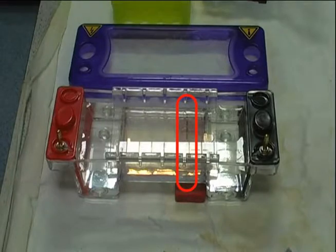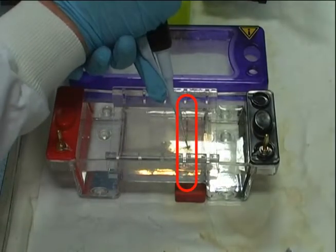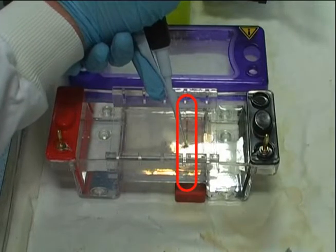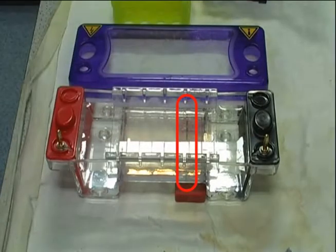Once the gel has been fully loaded with the sample DNA from the thermocycler, the power supply is attached and a current is passed across the electrophoresis unit to allow the DNA to separate as previously discussed.